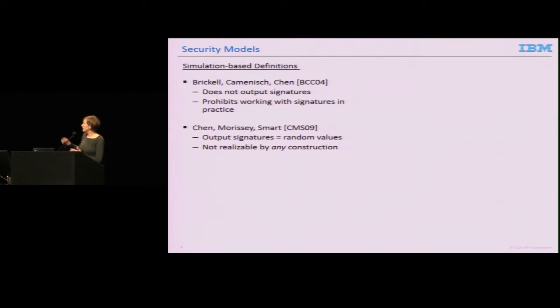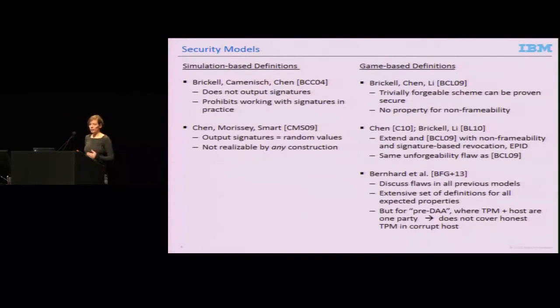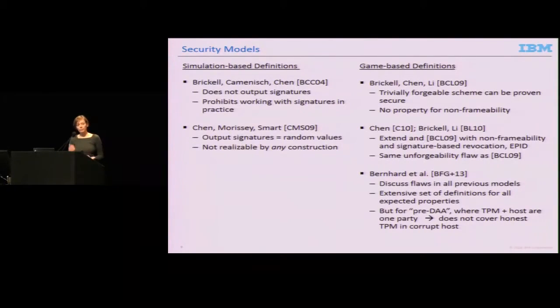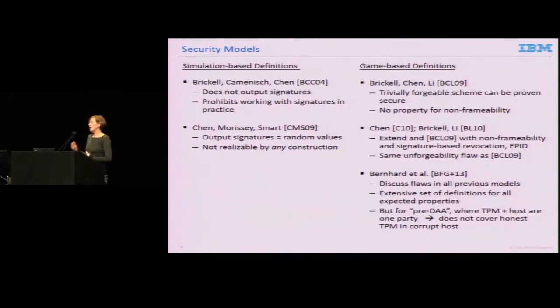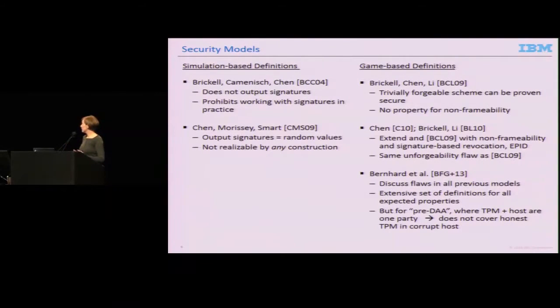Dealing with cryptographic values in simulation-based definitions is an inherent struggle. When work on formal models for DAA continued, they went to more established game-based definitions. Unfortunately, the first definition in that world had the exact opposite problem—it's too weak. It allows totally forgeable schemes to be proven secure. Even if you have a security proof in that model, it doesn't mean anything because you can prove a broken scheme to be secure. There was follow-up work that added extensions and was used for enhanced privacy ID for SGX, but they were all built on the initial model, so they all inherit this unforgeability flaw.